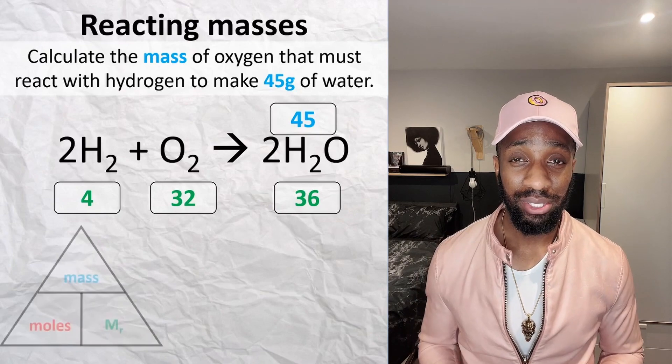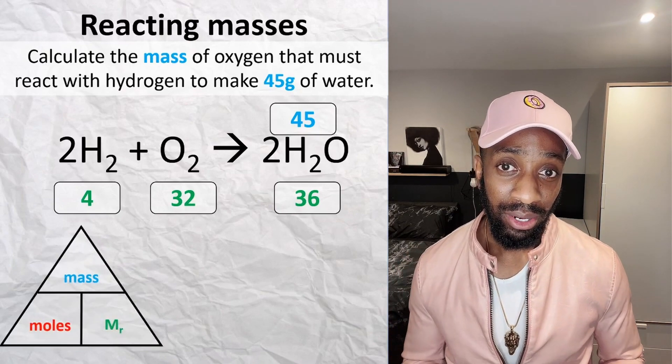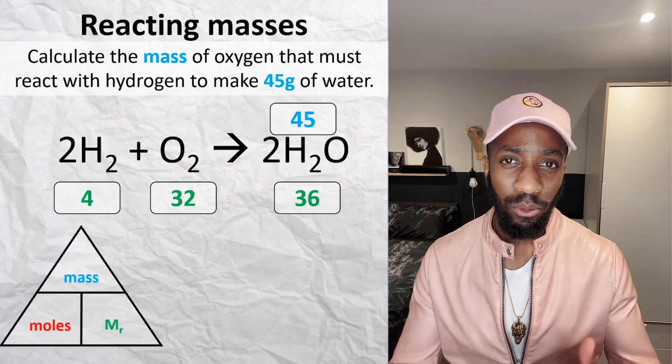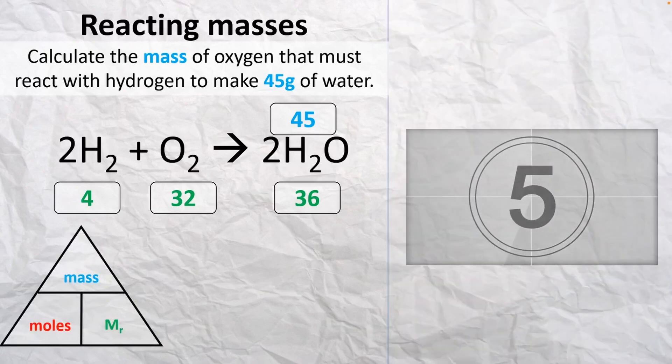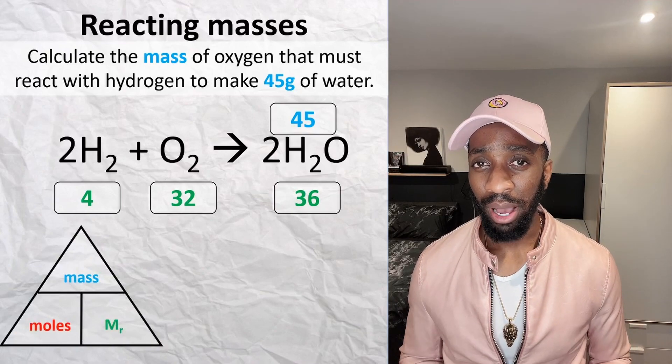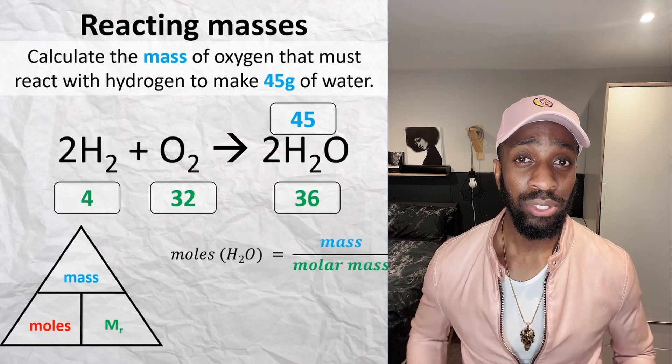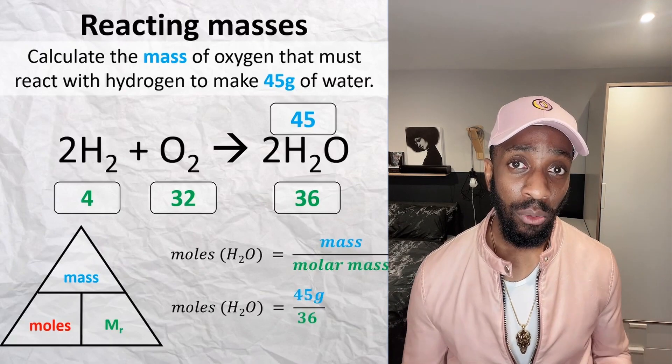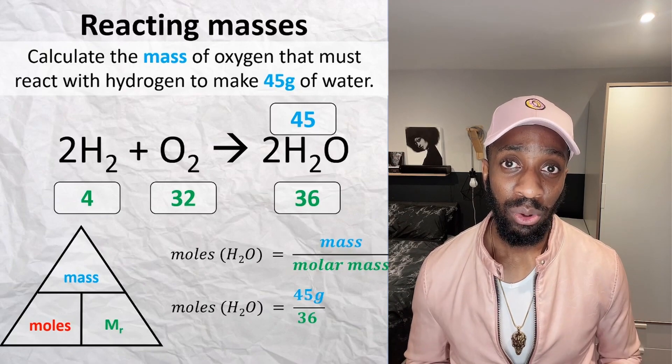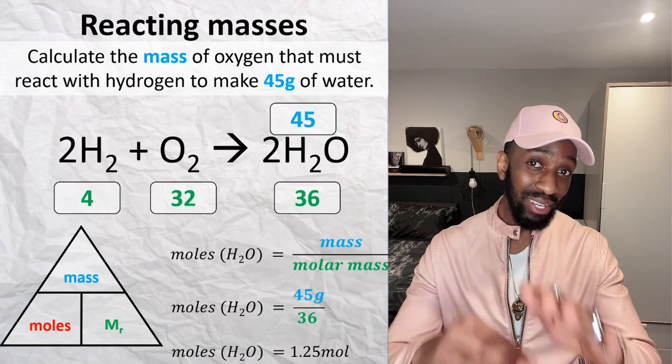Hopefully you're seeing where I'm going with this. Look at the equation triangle again, look at the color scheme and try and figure out what we're going to do. We've got the mass of water and we've got the molar mass of water, so we can work out the moles of water. So that'll be your 45 over your 36, which gives you 1.25 moles of water. But we're not done.